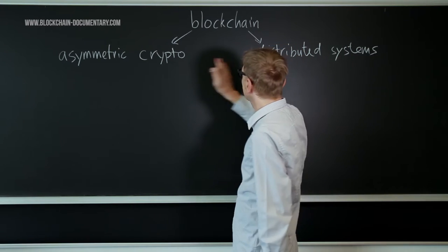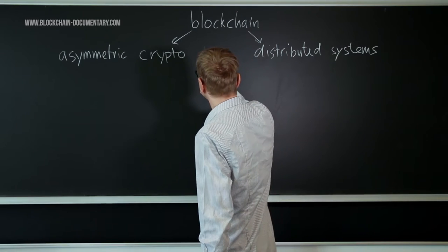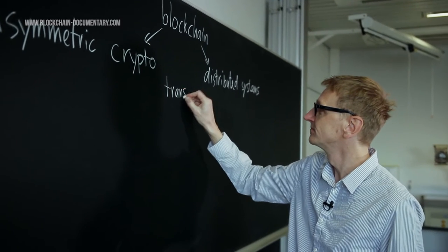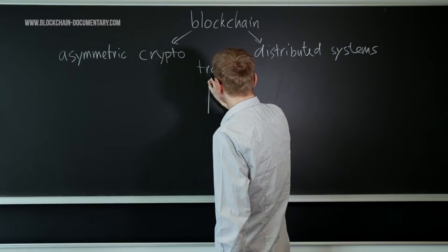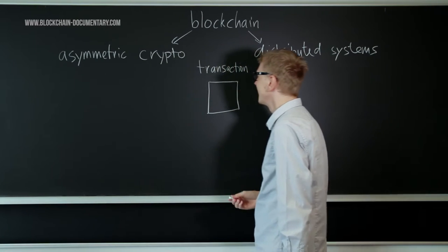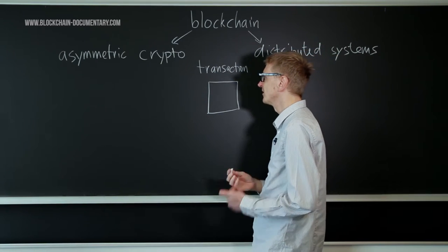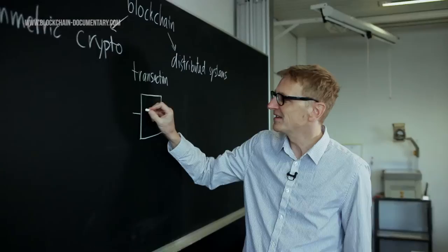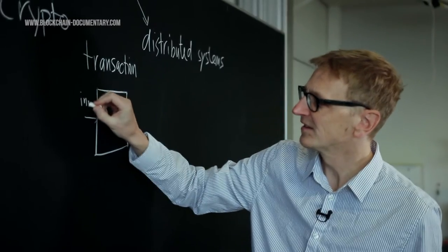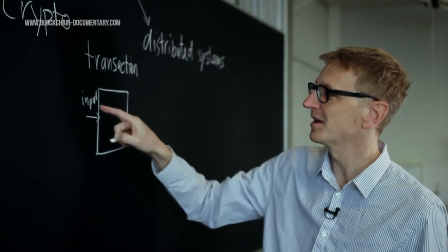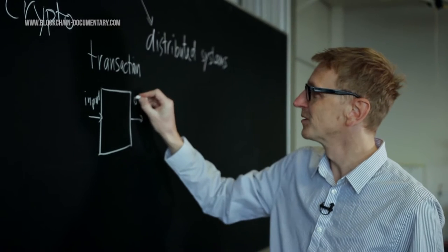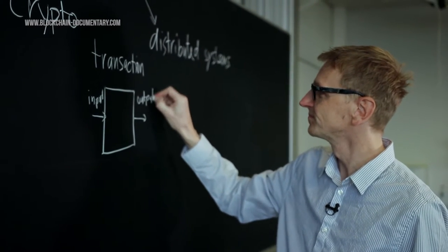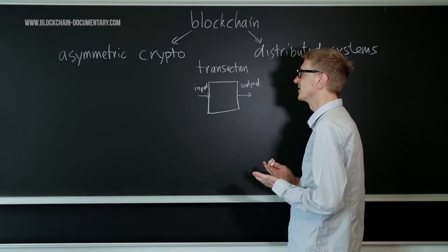Now both these things have in common so-called transactions. A transaction is something you already know from daily life. This is when you want to send money to somebody. This is basically taking an input, your current account where you want to send money from, and it's producing an output. This is who you sent the money to.